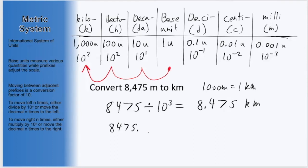Equivalently, we could have moved the decimal over one, two, three times to the left, just like we moved on our table, and this would give us the same answer number of 8.475 now in kilometers.